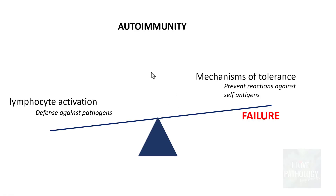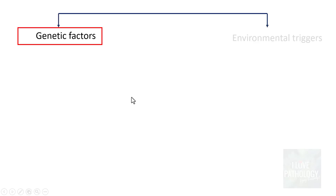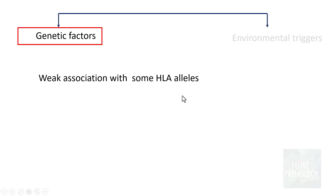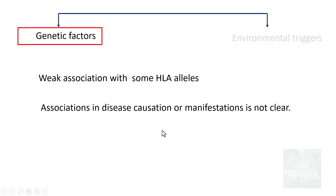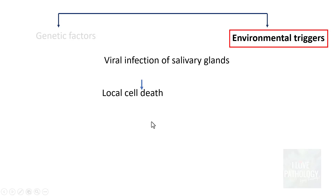As with all autoimmune diseases, Sjogren's syndrome is basically due to an imbalance between lymphocyte activation and mechanisms of tolerance — specifically, a failure of tolerance driven by genetic factors and environmental triggers. Regarding genetic factors, Sjogren's syndrome has a weak association with some HLA alleles, but the association in disease causation or manifestations is not really clear.